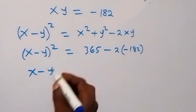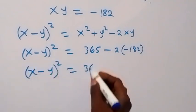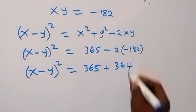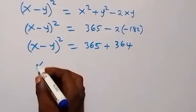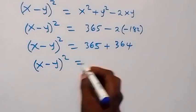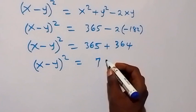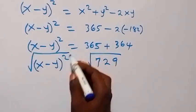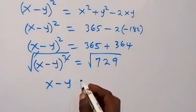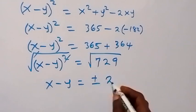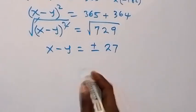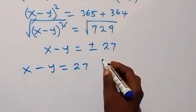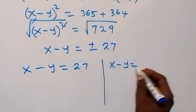So x minus y squared equals to 365, then plus 2 times 182 gives us 364. When we add these together, x minus y squared equals to 729. Taking the square root on both sides, x minus y equals to plus or minus 27. This means we have two cases: x minus y equals to 27, and x minus y equals to minus 27.